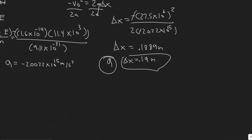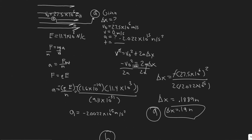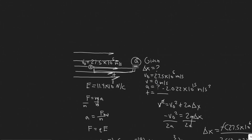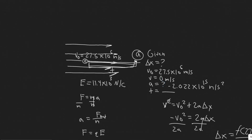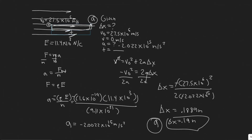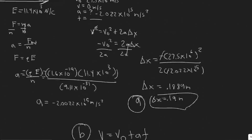Now for Part B: how much time will elapse before the electron returns to its starting point? The trick here is that if we find the time it takes for the electron to stop, we can multiply that by 2 — because the time it takes to travel forward equals the time it takes to return. So first we need to find the time to stop using kinematics.